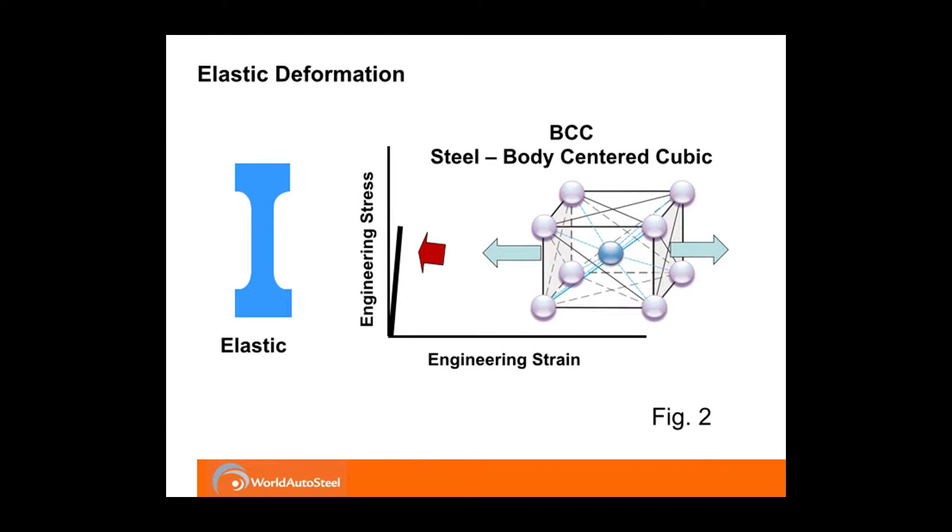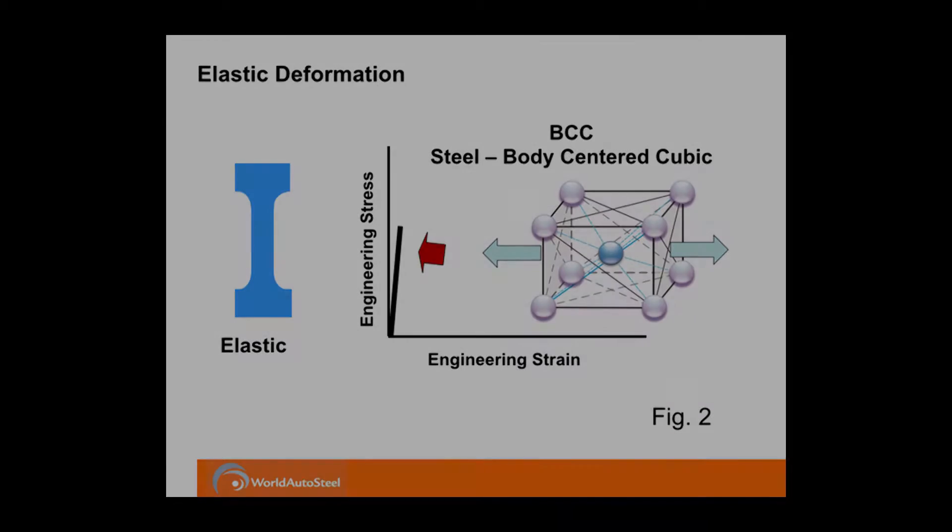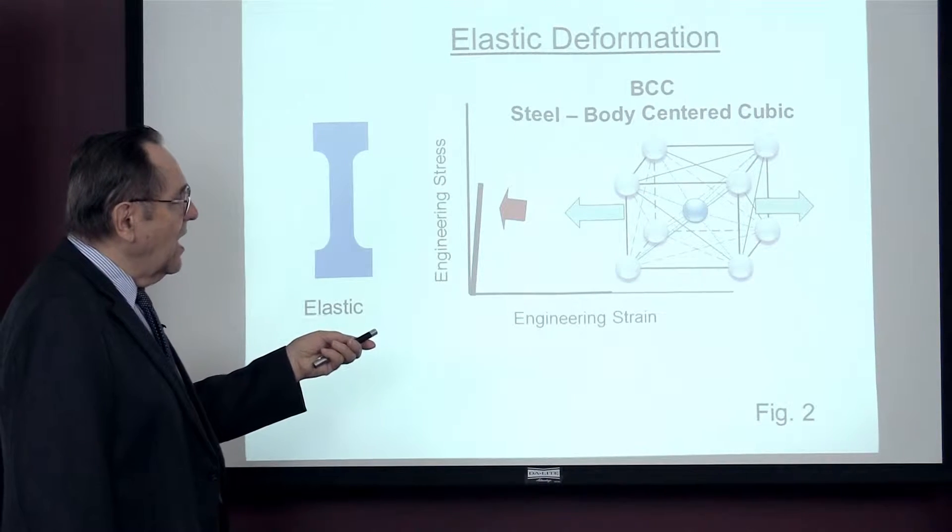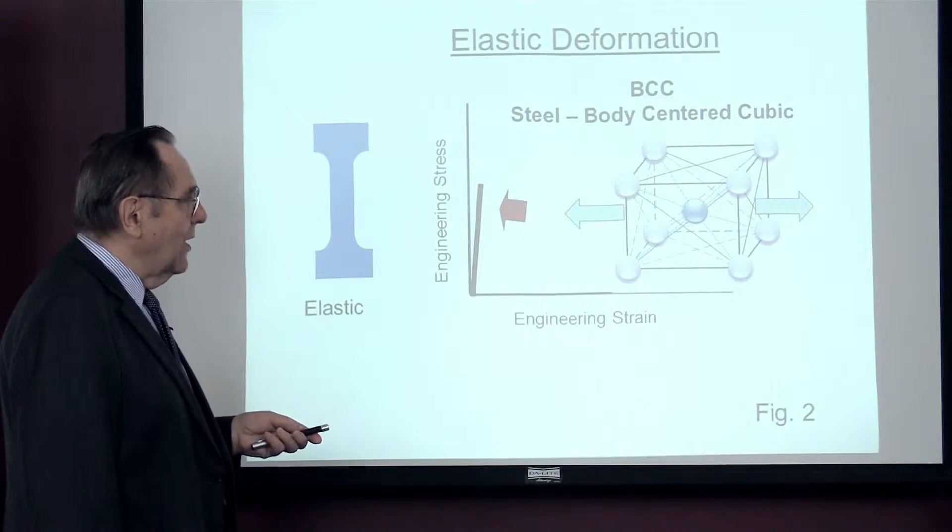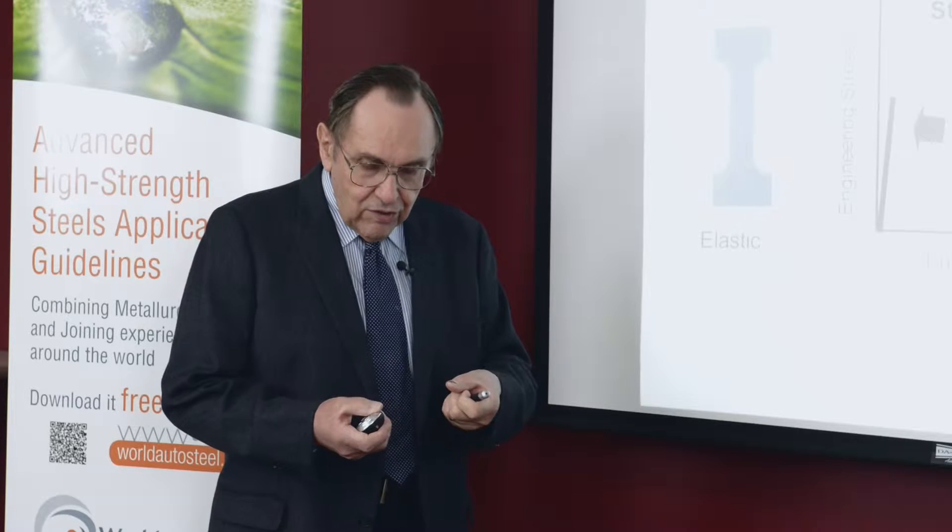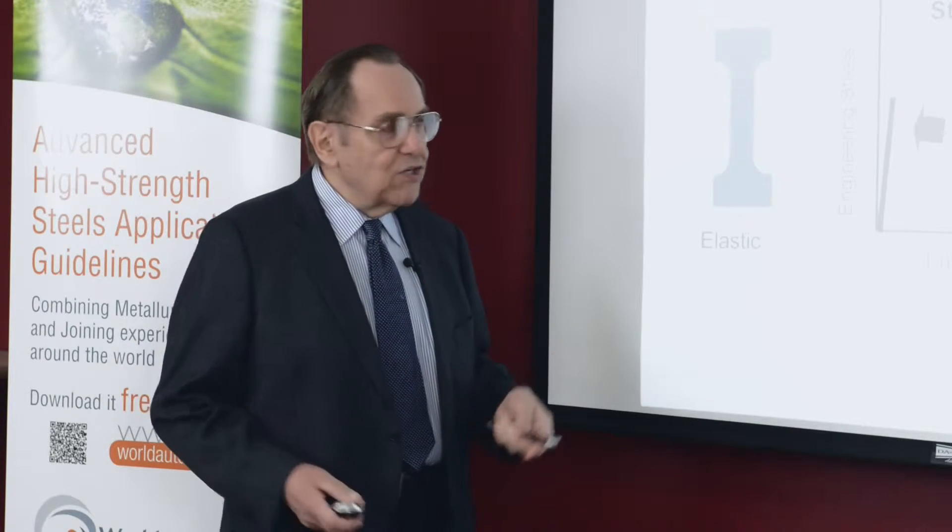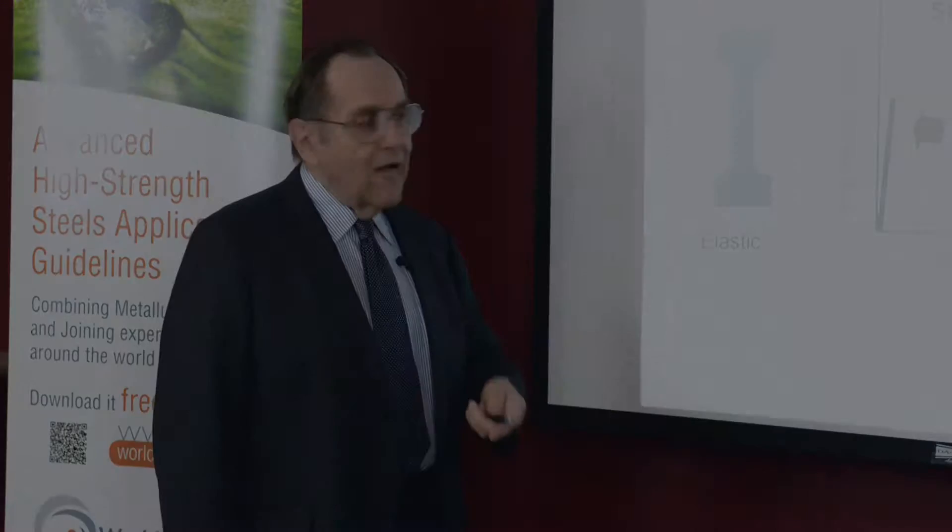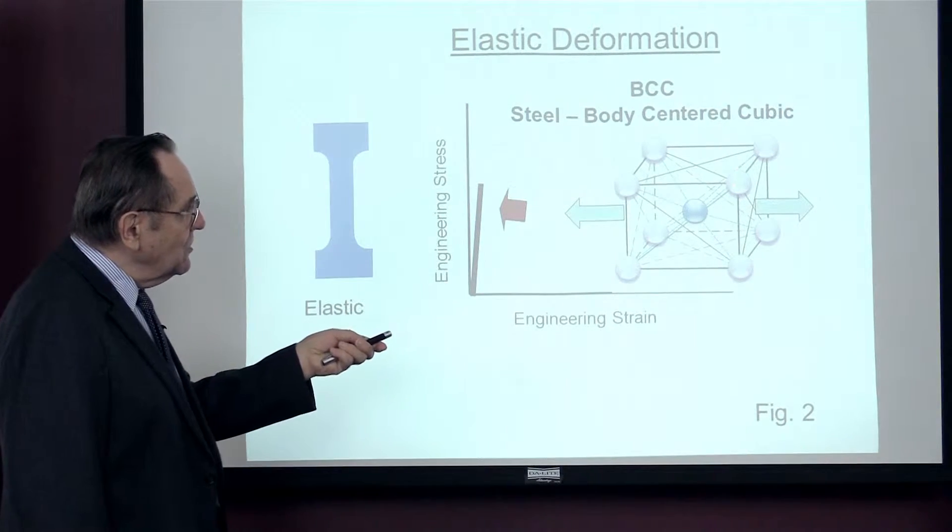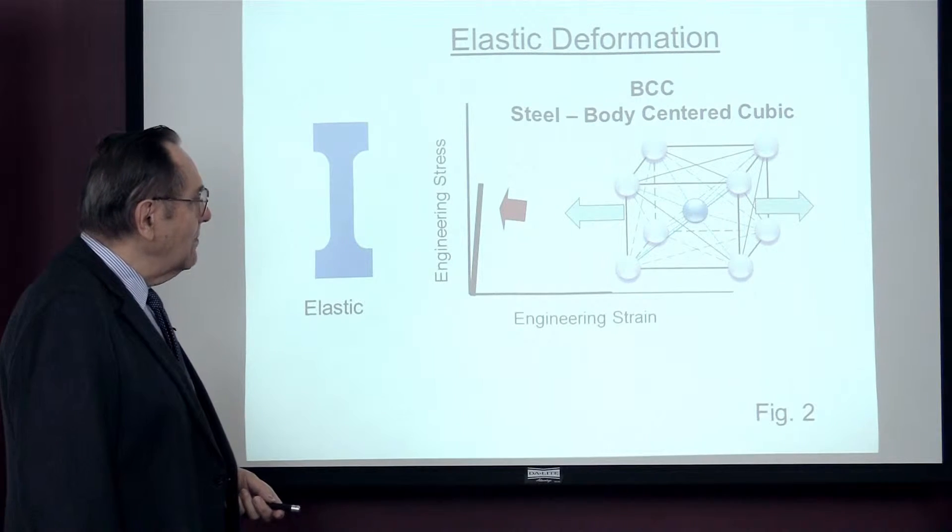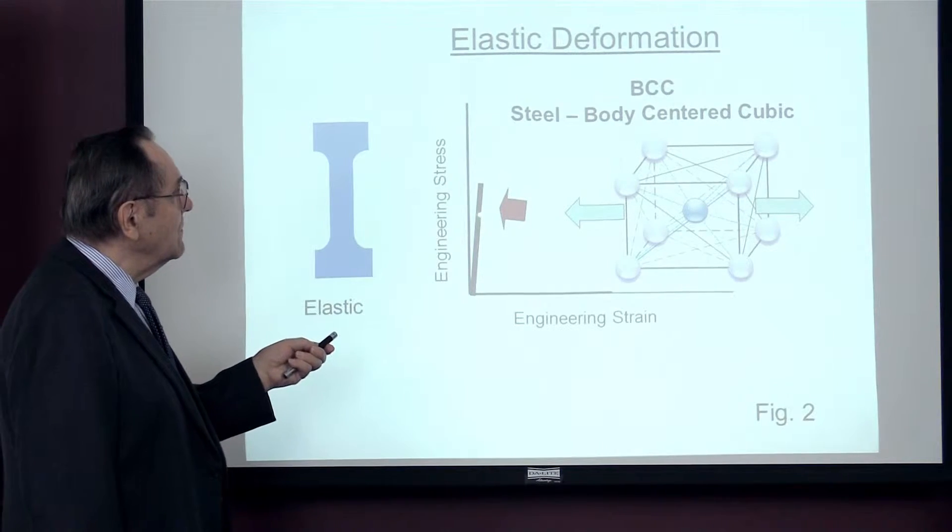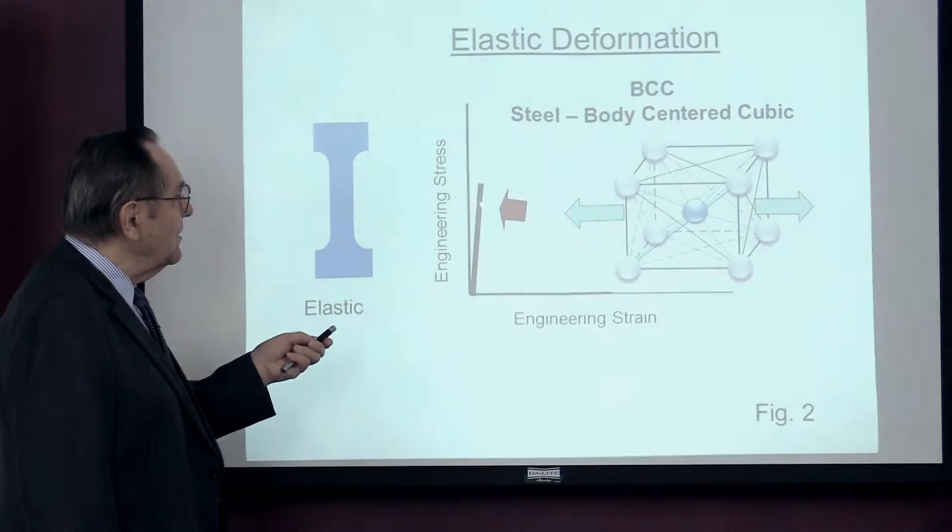These atoms are in a certain array, their distance they are in balance, and they like to stay that way. When you start to deform metal and you start to put a force on it, the first deformation that starts is the elastic deformation where you're starting to spread these dimensions here on your atomic cube. And this creates the elastic modulus of the steel, also called the Young's modulus.